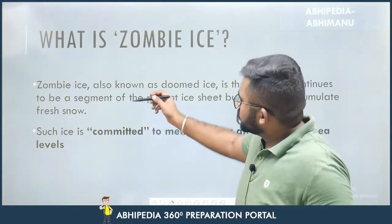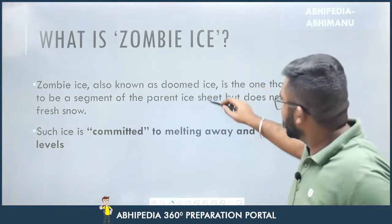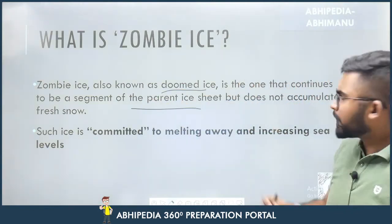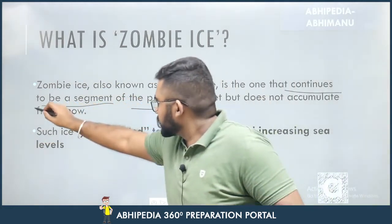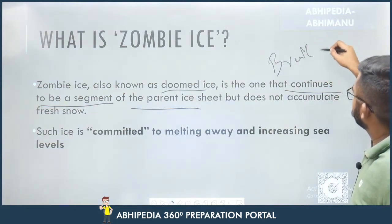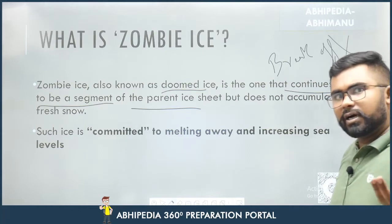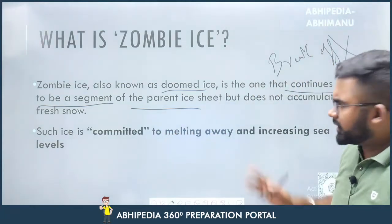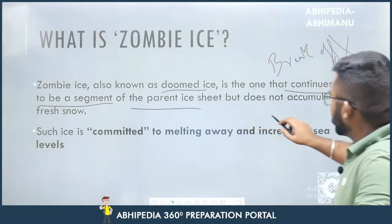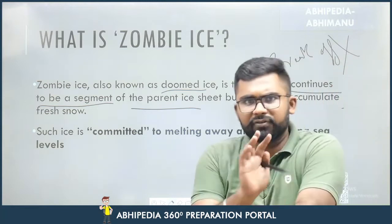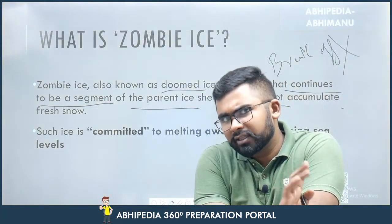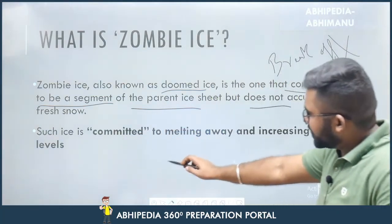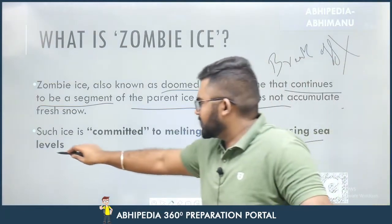Zombie Eyes is also known as Doomed Eyes. It continues to be a segment of the parent ice sheet — it does not break off. To be explicitly clear: it continues to be a part of the parent ice sheet but does not accumulate fresh snow. And if it is not accumulating fresh snow, given that global warming is occurring, it will melt away. Such ice is committed to melting away and increasing sea levels.